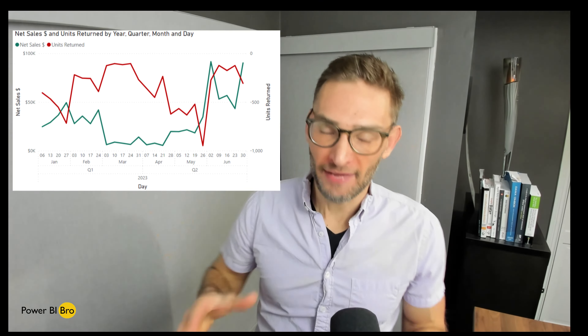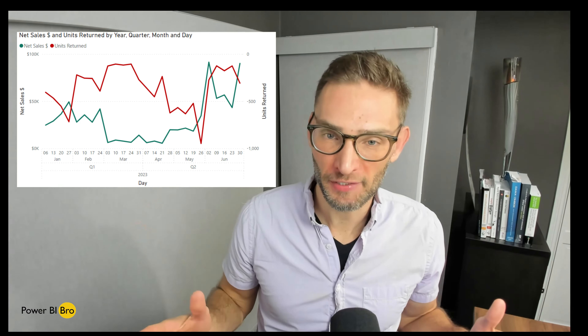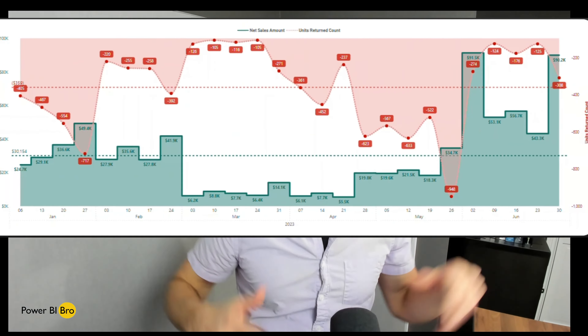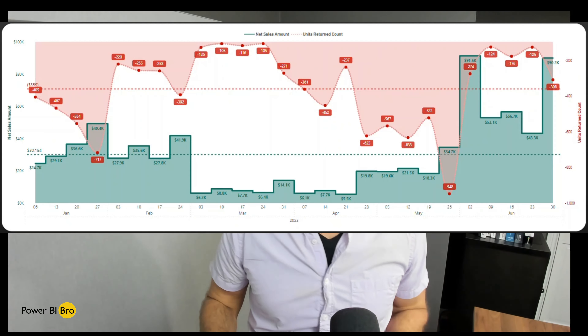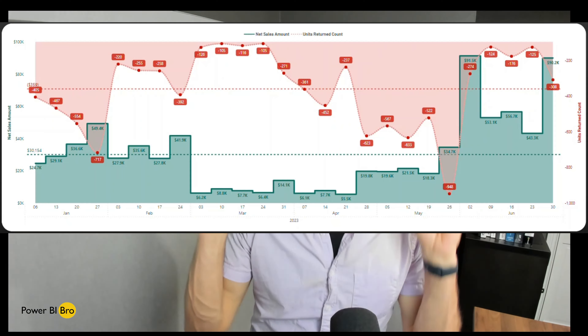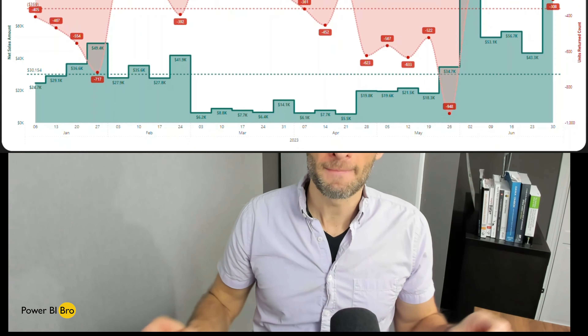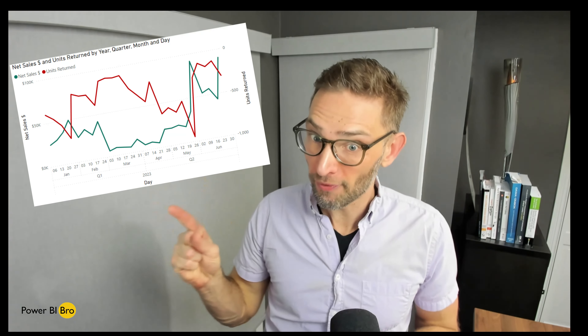Welcome! In today's video you're going to be equipped with how to improve your dashboards, especially around visualizations with line charts. Take something boring like this — a very simple two-axis line chart, nothing special about it — and turn it into something beautiful, sexy, and intentional, like this: an area chart with an inverted axis, intentional colors, smooth lines, or a beveled step bottom. There are lots of nuances in the formatting here.